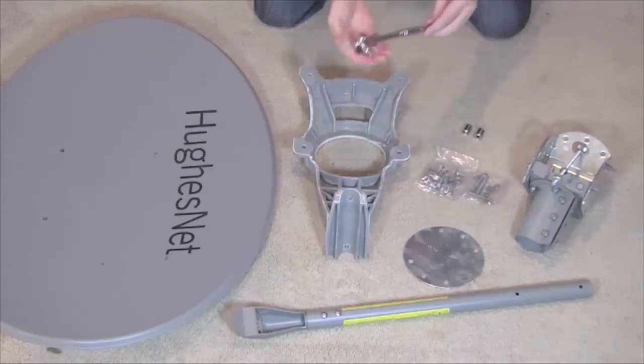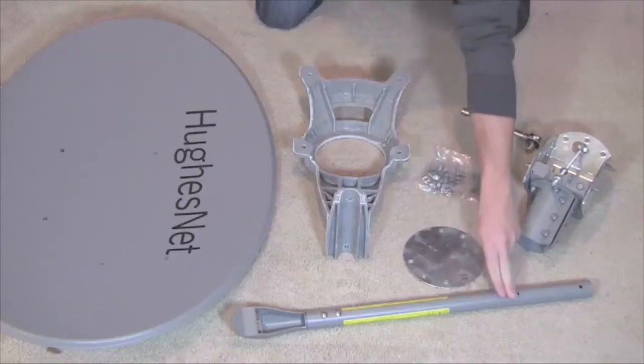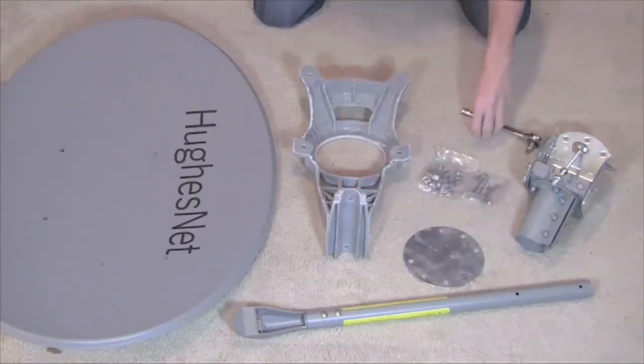The only tool you should need is a socket wrench. Most of the antenna is assembled using a half inch socket, but a 7/16th socket is also needed when attaching the feed arm to the reflector bracket. Let's get started.